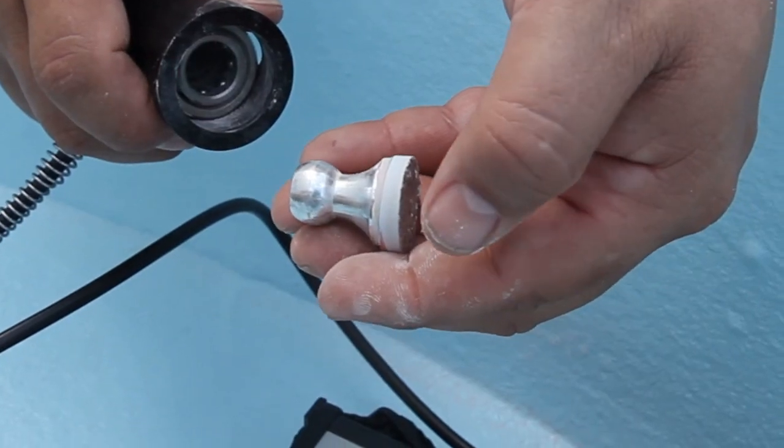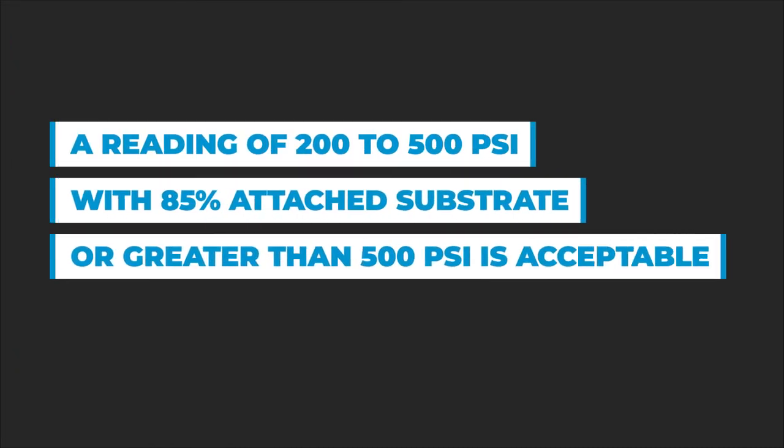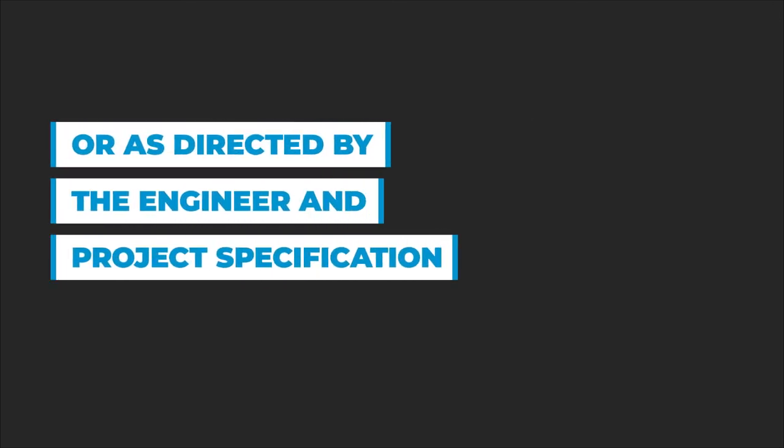Examine the amount of substrate attached to the dolly. A reading of 200 to 500 psi with 85% attached substrate or greater than 500 psi is acceptable or as directed by the engineer and project specification.